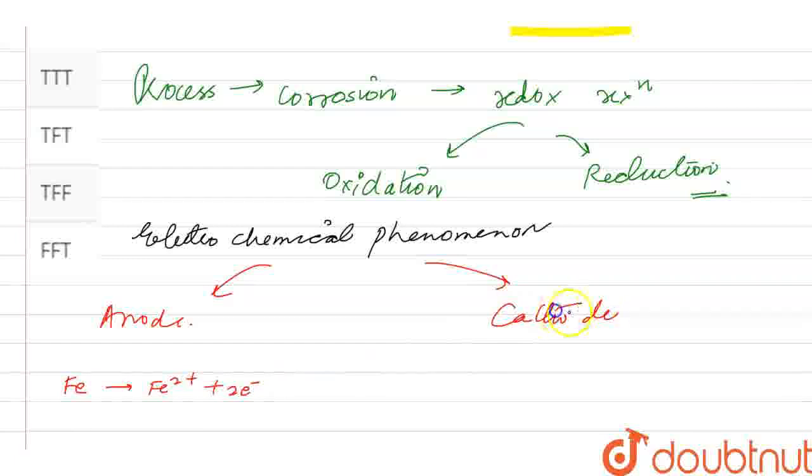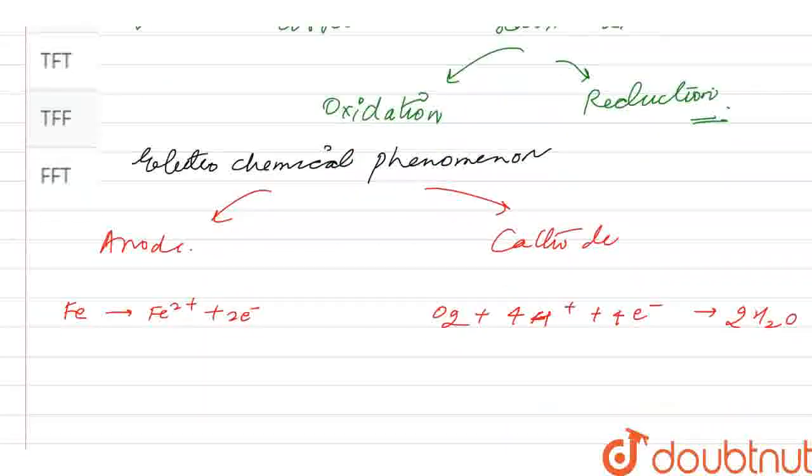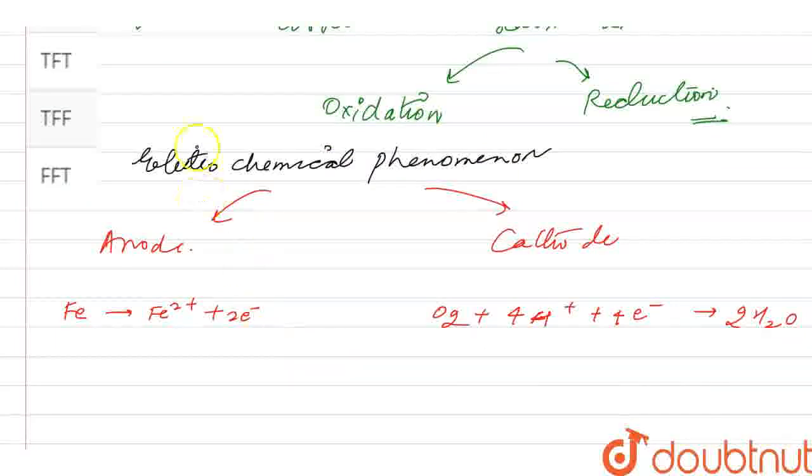And at cathode, what happens here? O2, which converts with H+ plus electrons. So, this will convert to water. And if I balance the reaction, then what will happen here? Twice, then 4H+ plus 4 electrons. This is our reaction at cathode. If I talk about overall reaction,